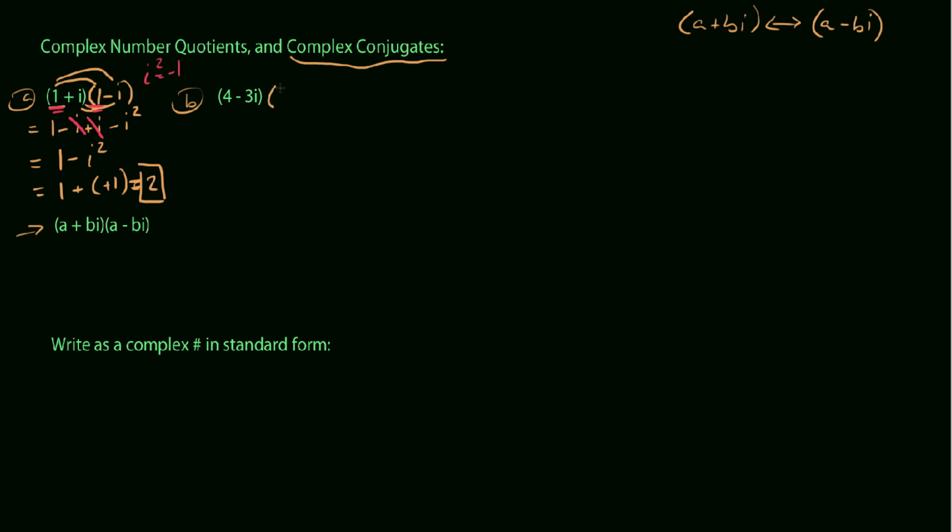They cancel each other out. And the 1 at the end there has to contain an i squared. So let's look at this one. What if we multiply 4 minus 3i times its conjugate, its complex conjugate, 4 plus 3i? So you'll notice in the beginning here we get 4 squared, we get 16.